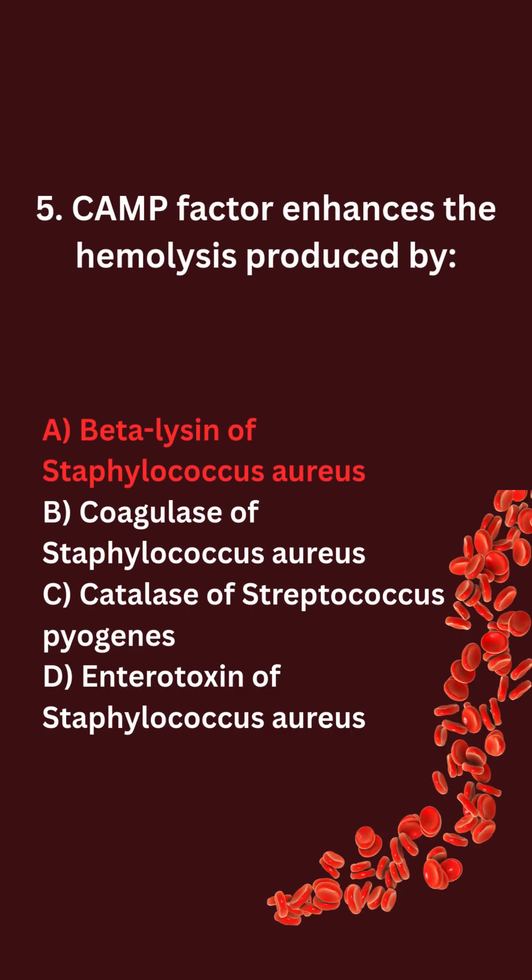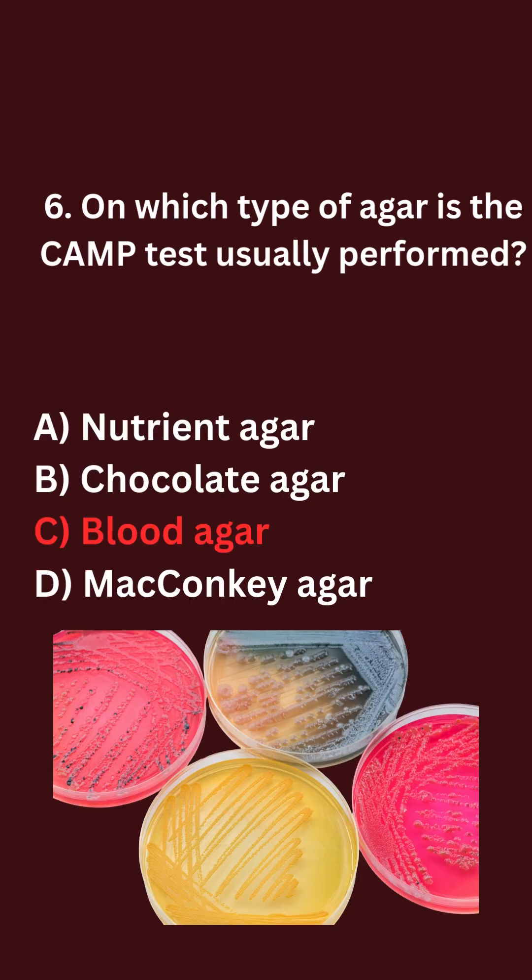CAMP factor enhances the hemolysis produced by: A. Beta lysin of Staphylococcus aureus. B. Coagulase of Staphylococcus aureus. C. Catalase of Streptococcus pyogenes. D. Enterotoxin of Staphylococcus aureus.